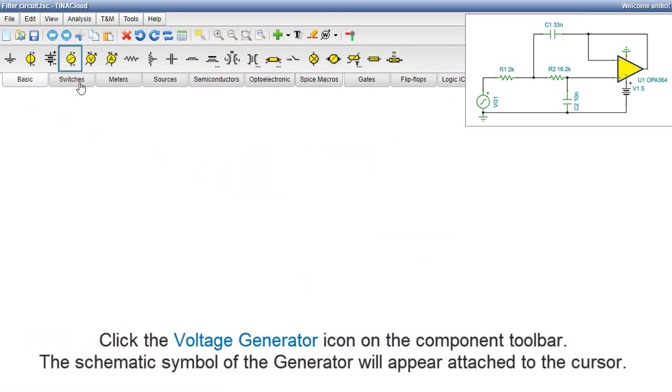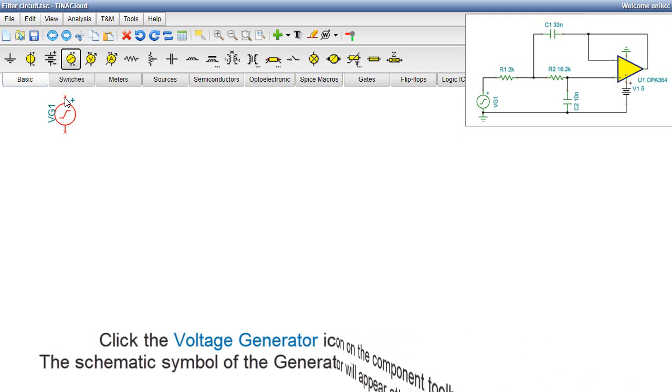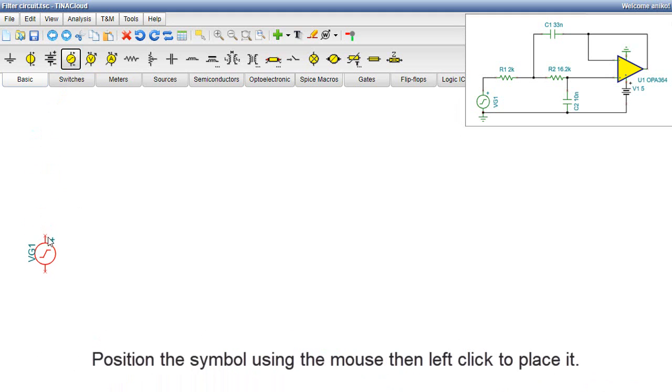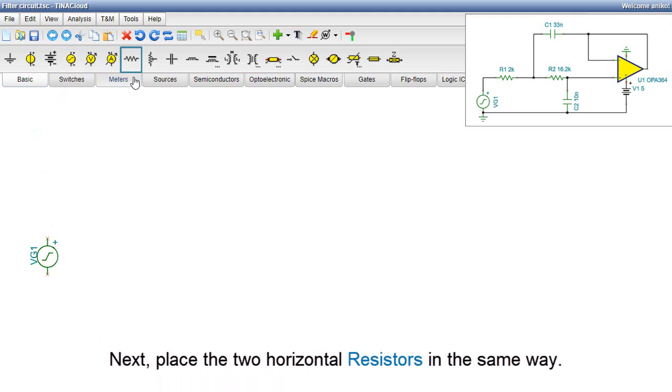Click the Voltage Generator icon on the Component Toolbar. The schematic symbol of the generator will appear attached to the cursor. Position the symbol using the mouse, then left-click to place it. Next, place the two horizontal resistors in the same way.